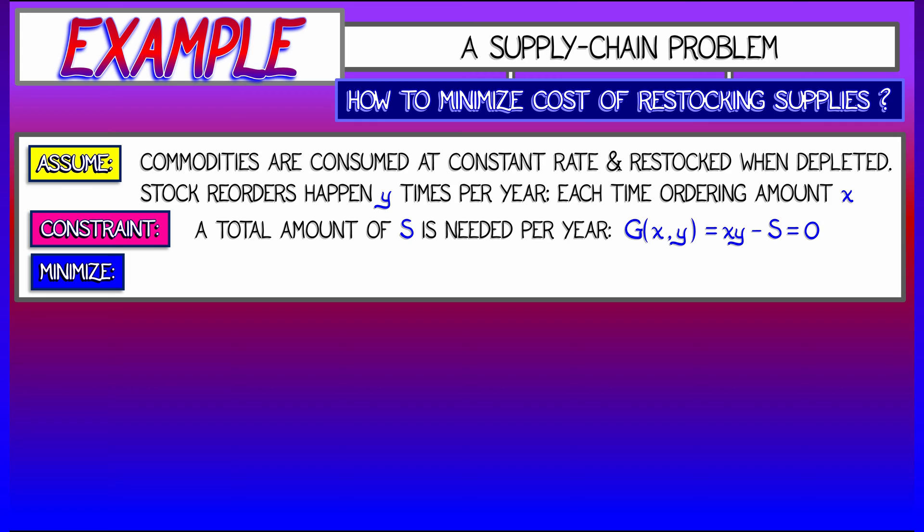We also have to minimize something. In this case, we're going to minimize a cost function that is a linear function of x and y. These coefficients are, first of all, a, which is the average storage cost. If you order a full year supply at once, you have to store it somewhere. Maybe you have to refrigerate it.